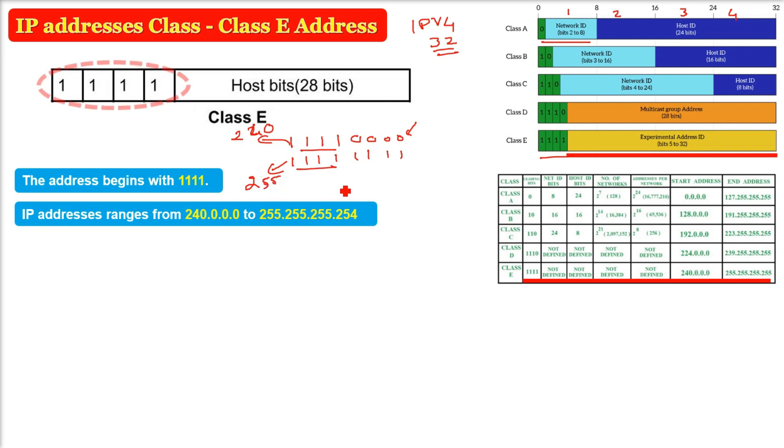The IP is ranging like that. So the first octet, if it is between 240 and 255, you can safely say this is a Class E address. As we discussed in Class D, Class D is all about multicasting.